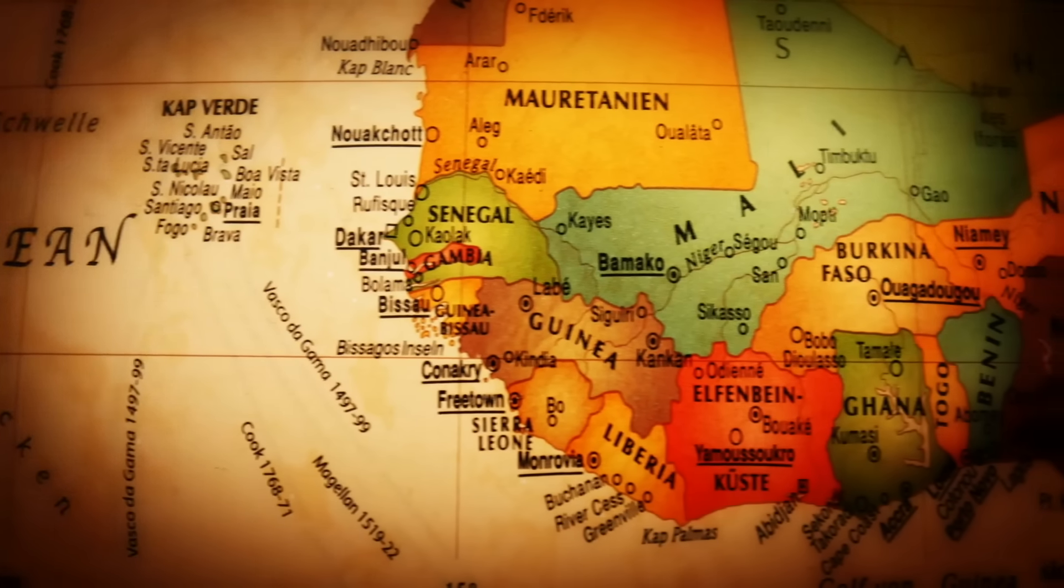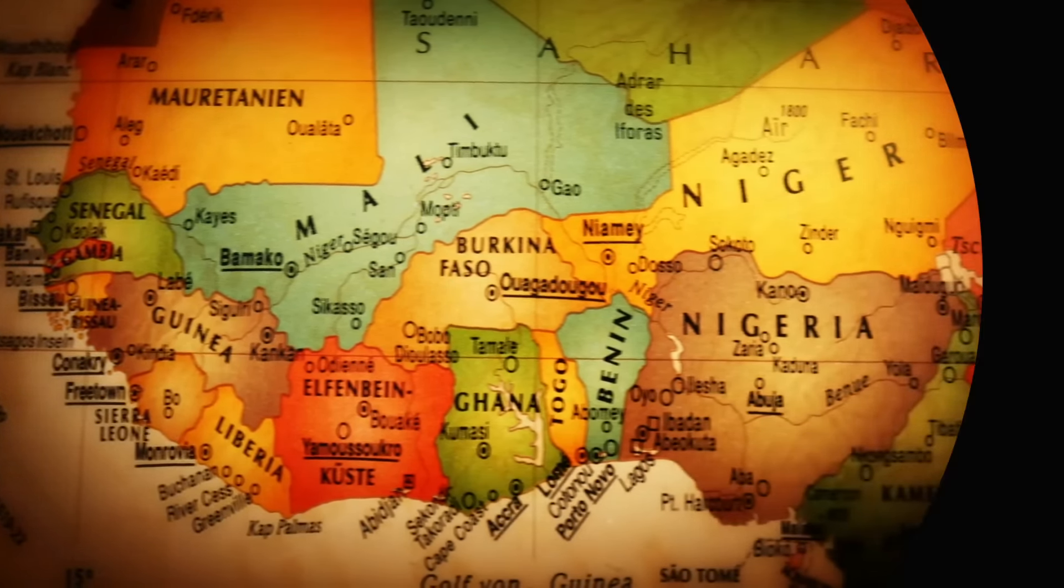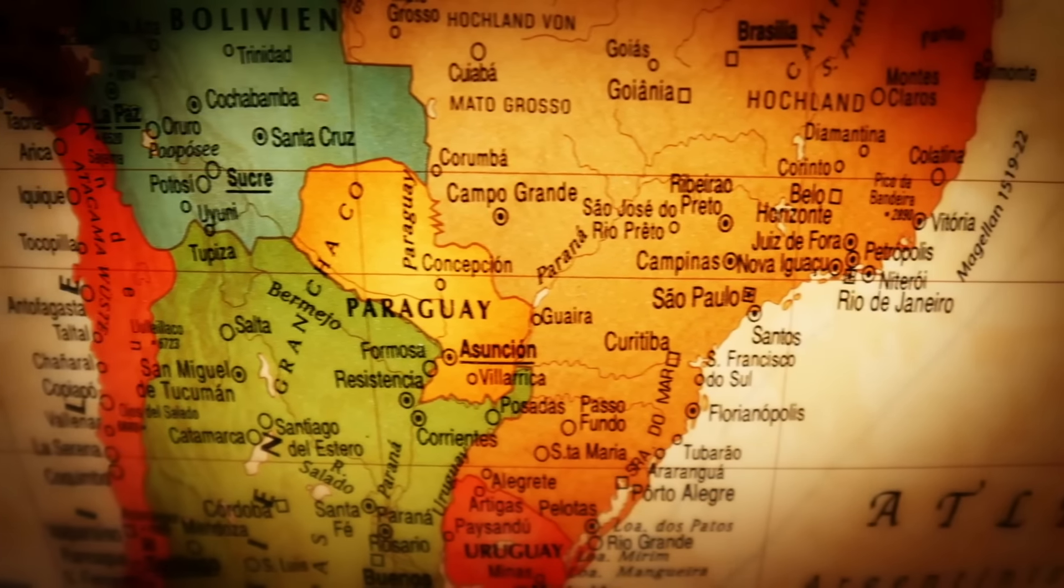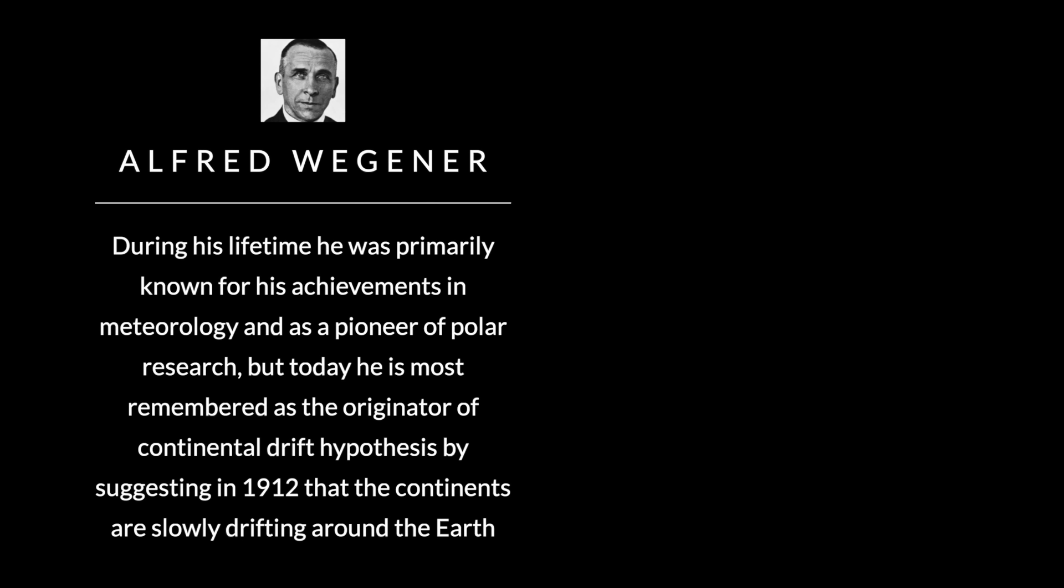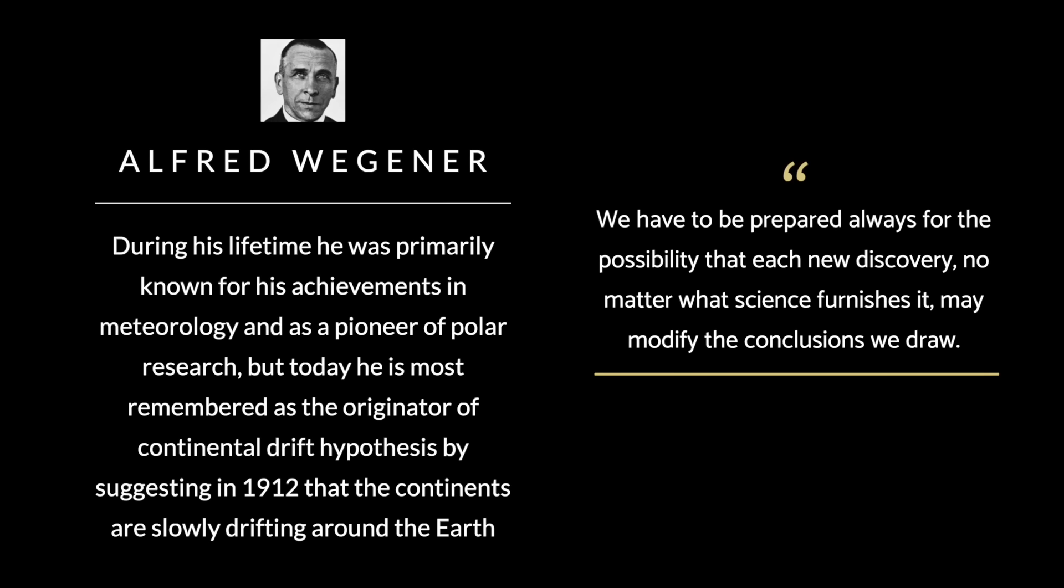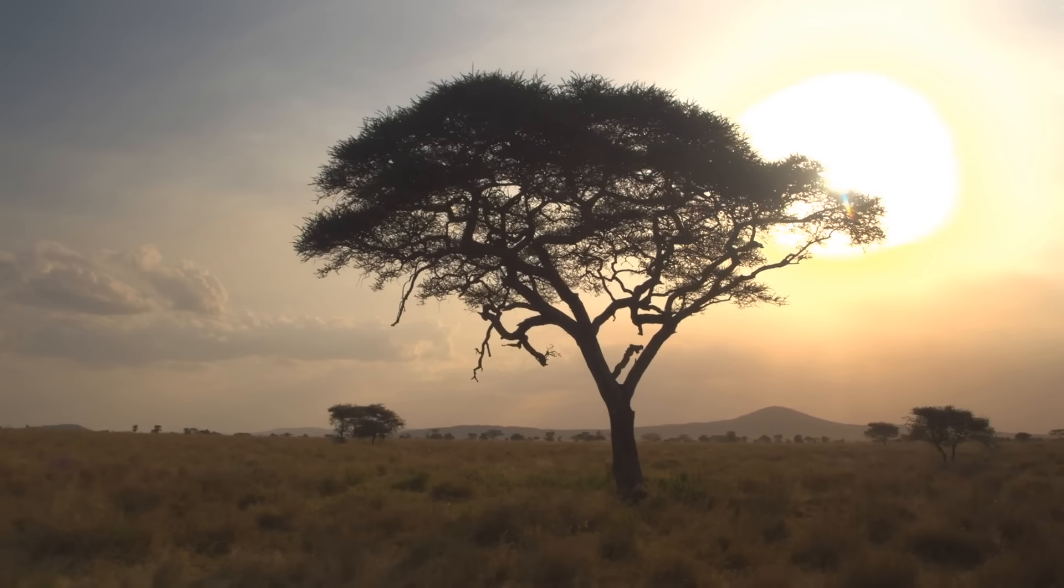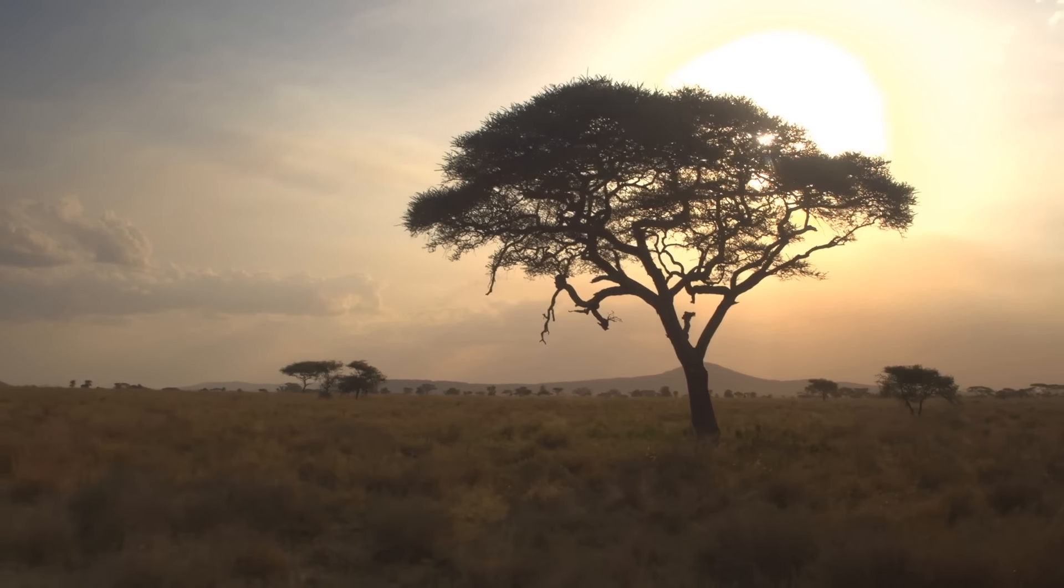To explain this, many scientists believed that there was once a huge bridge of land that connected Africa and South America, a bridge that somehow disappeared without a trace. But a German geophysicist named Alfred Wegener believed that Africa and South America seemed to fit together like puzzle pieces precisely because they were connected at one point in one huge mass of land.